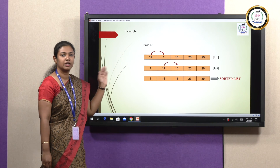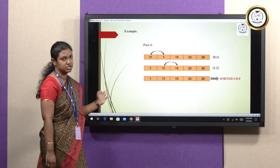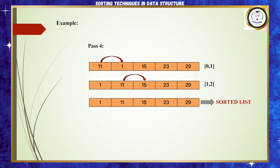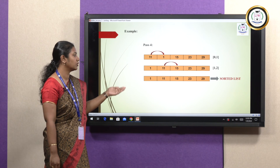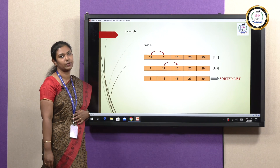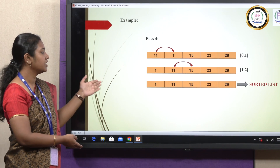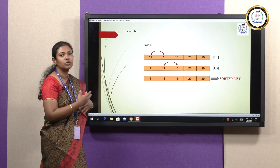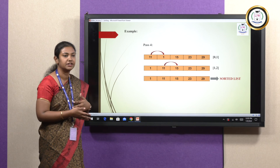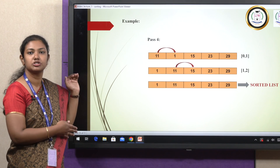In pass 4 we start with 11, 1, 15, 23 and 29. Comparing the first two elements, 11 and 1 — since 1 is smaller than 11, the positions are swapped. The second and third elements, 11 and 15, are compared; since 11 is smaller, it is ignored. The third and fourth elements, 15 and 23, are compared; since 15 is smaller, it is ignored. The last two elements, 23 and 29, are compared; since 23 is smaller, it is ignored. By the end of pass 4 we have a sorted list: 1, 11, 15, 23 and 29.